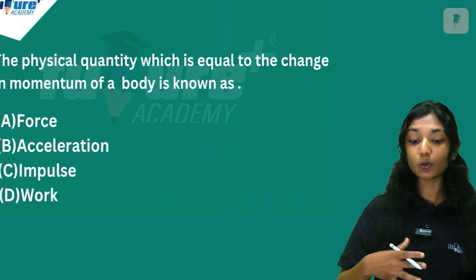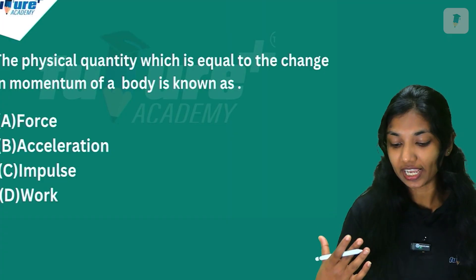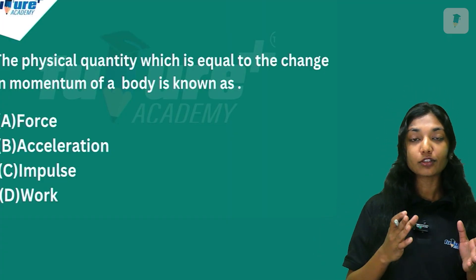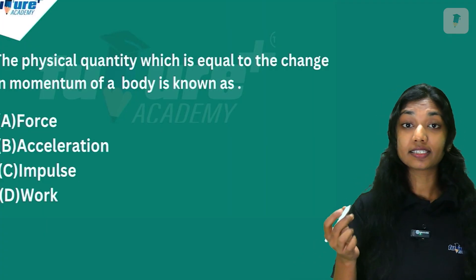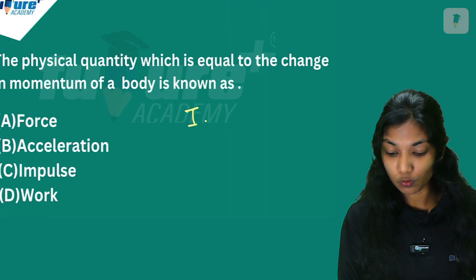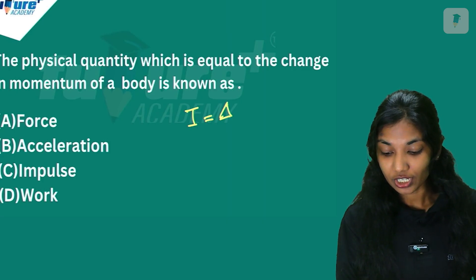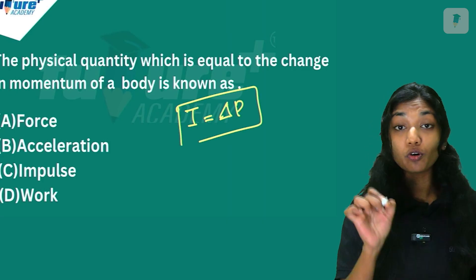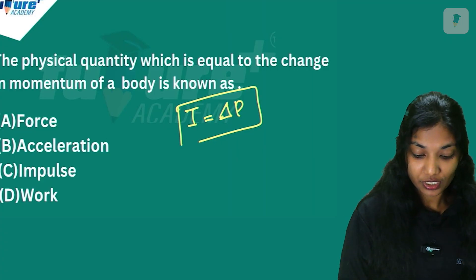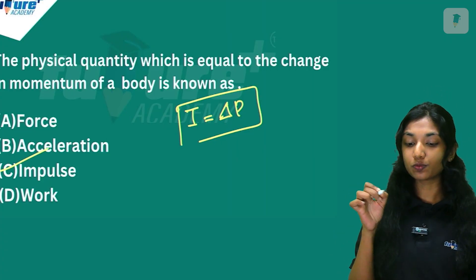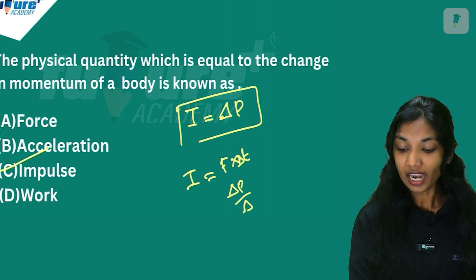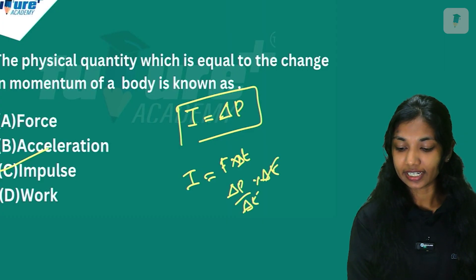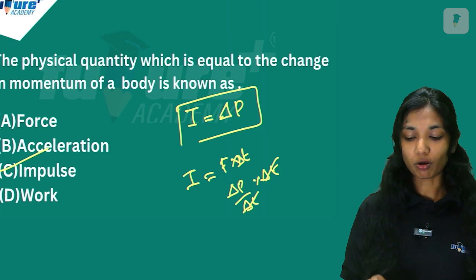Next question: The physical quantity which is equal to the change in momentum of a body is known as? Impulse I is equal to F into delta T, which equals dp/dt into dt — the dt cancels — so I equals change in momentum. The answer is Option C, Impulse.